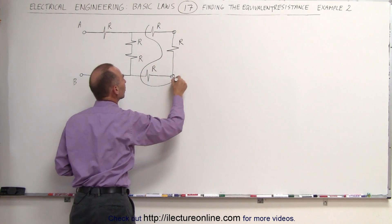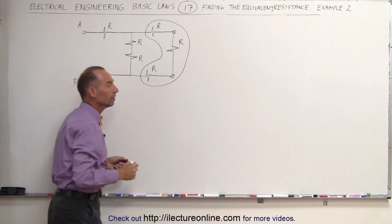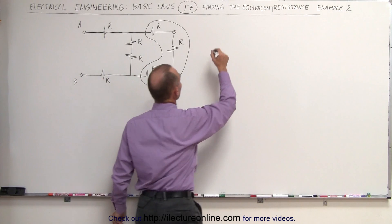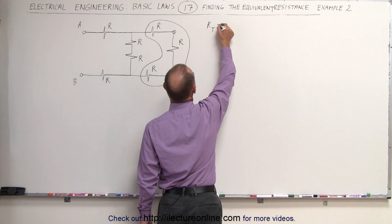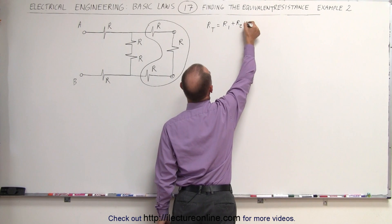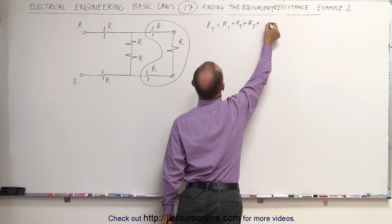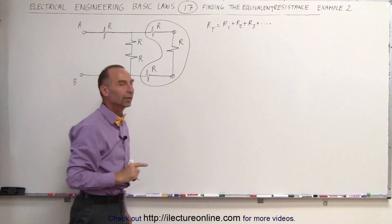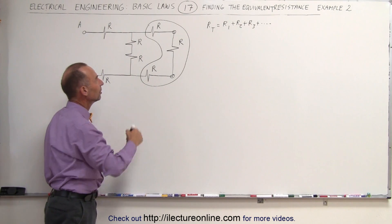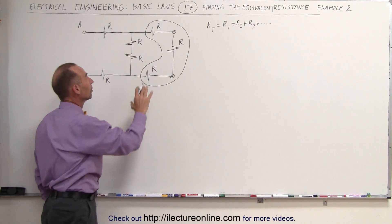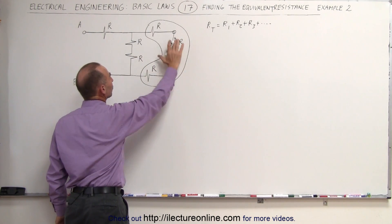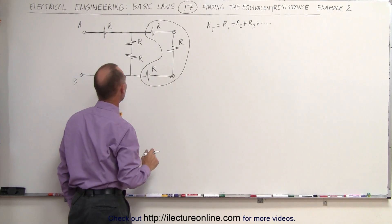And then we can combine those three resistors into a single resistor. The total resistance of a series circuit is simply R1 plus R2 plus R3 plus however many there are. In this case, there's only three. So we add those three together. Therefore, the equivalent resistance of this branch right here must be equal to 3R, R plus R plus R.